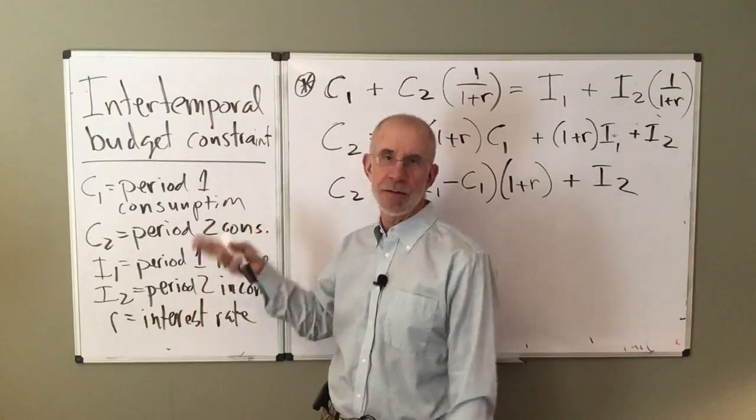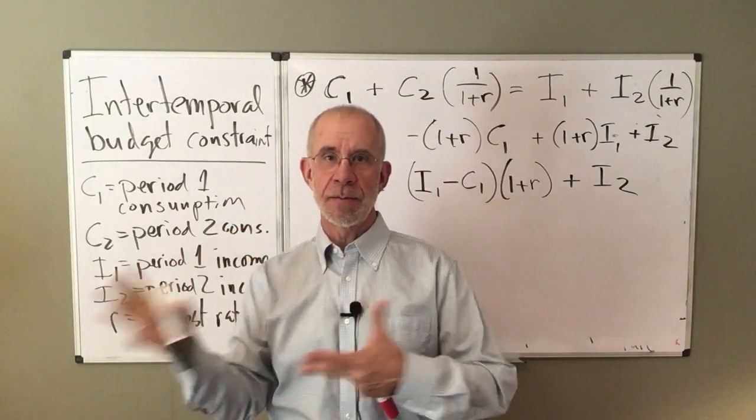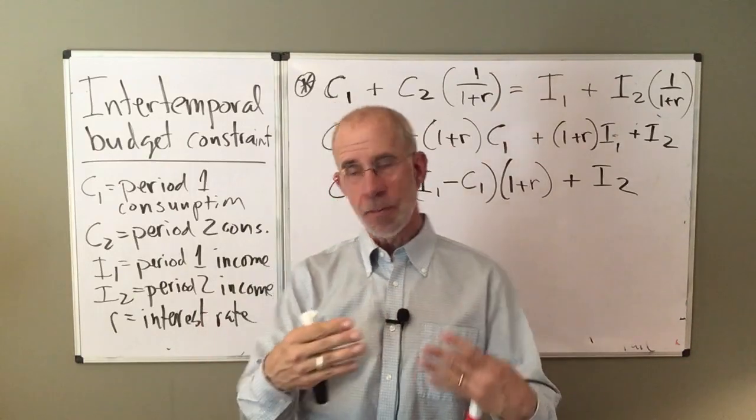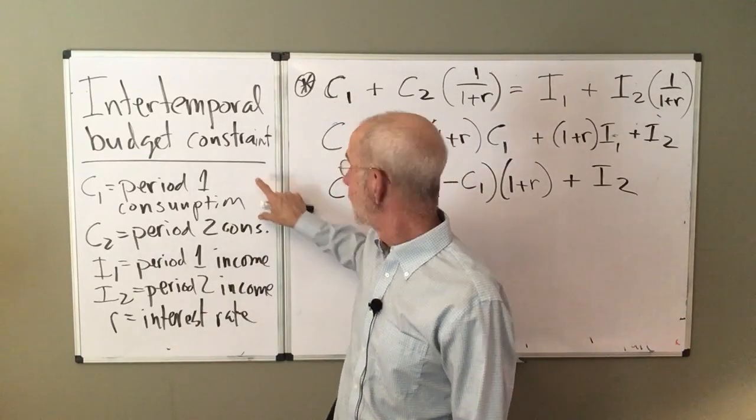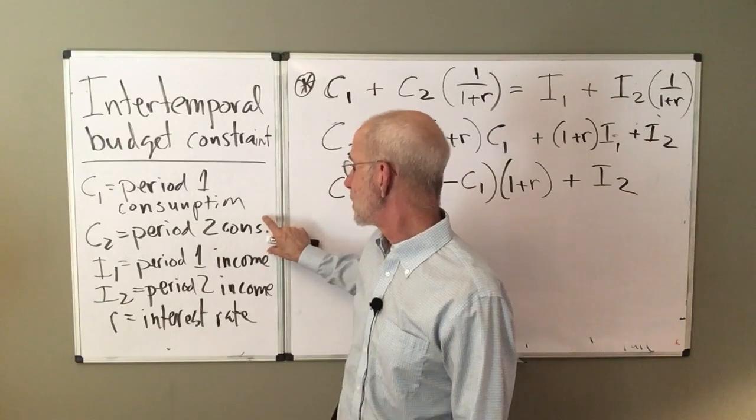We're going to think about just a single good. We're not going to allow them to choose between goods. It's just today and tomorrow. So we've got C1, C1 is the period one consumption. C2 is period two consumption.